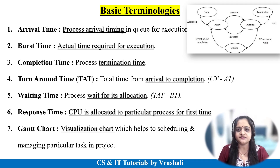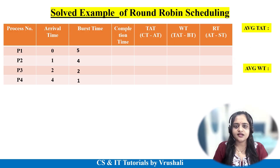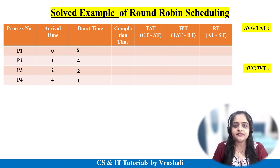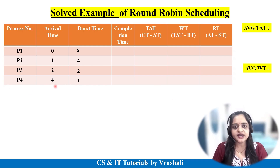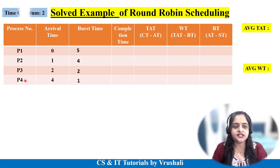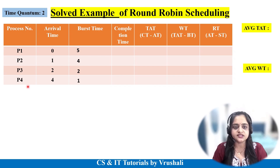Let's solve the example. This kind of example is asked in your university exam as well as the GATE exam, so prepare accordingly. First, you need to analyze which data is given and which data you need to find out. In this particular table, process numbers are given: P1, P2, P3, and P4 — there are total 4 processes.